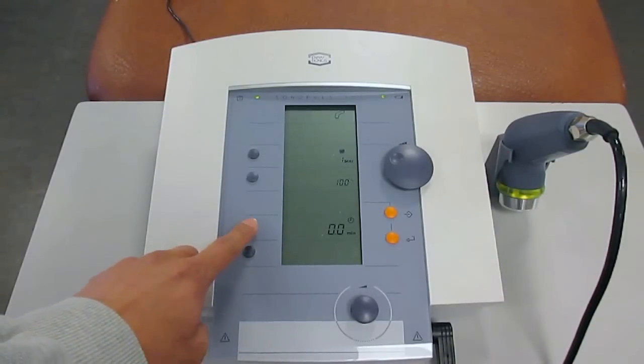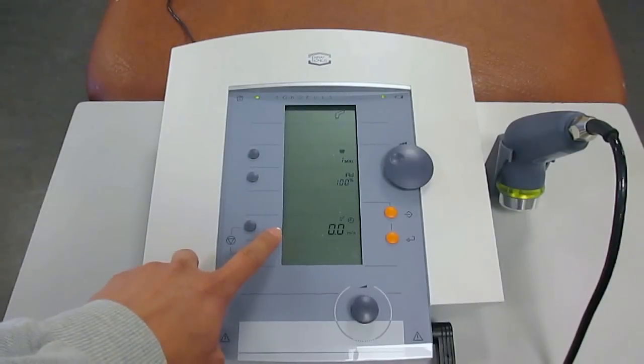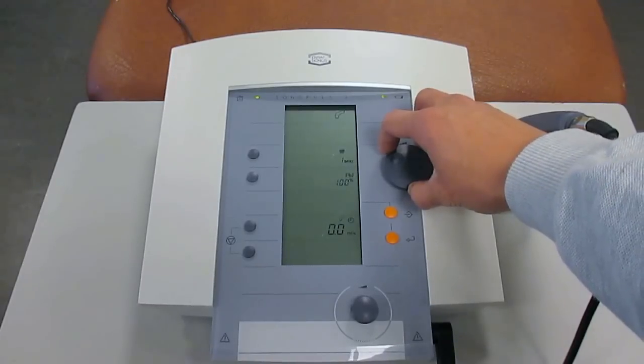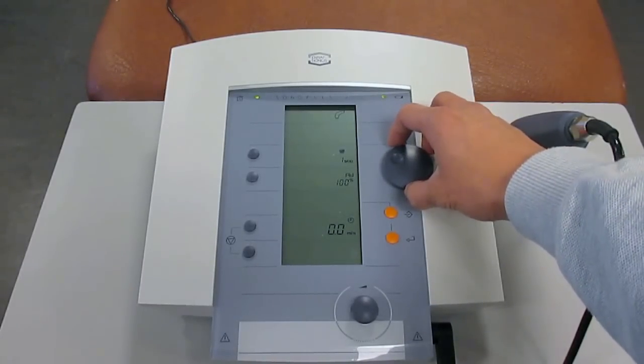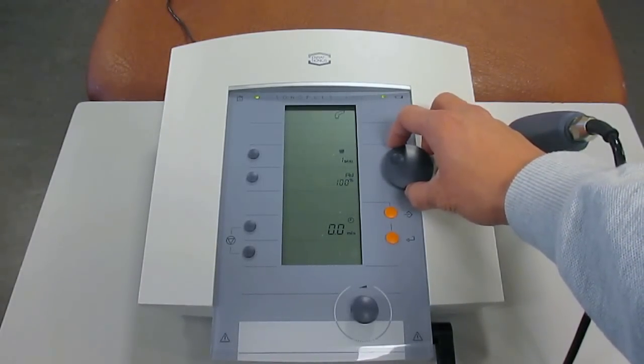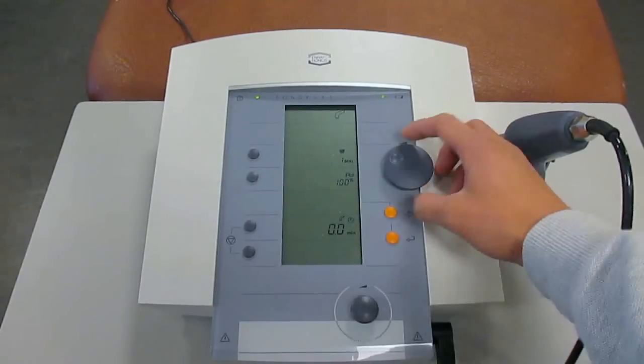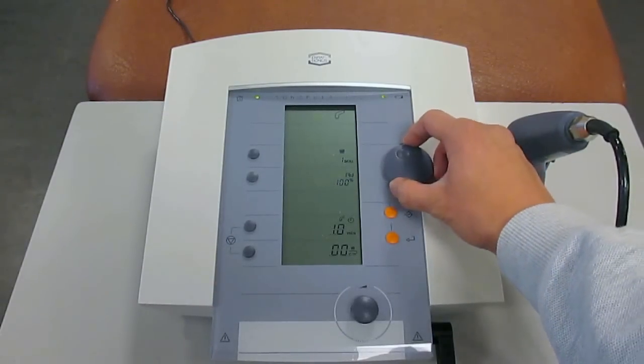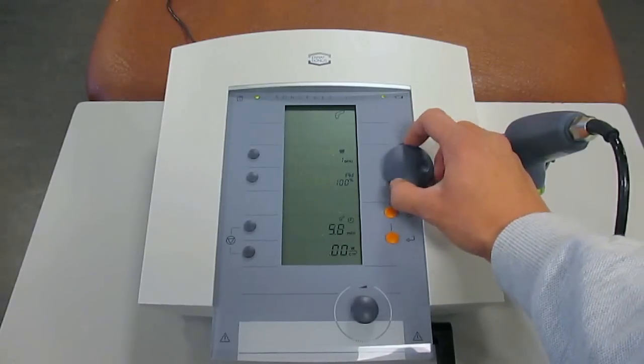This setting over here controls the amount of minutes that you'll be setting for the therapeutic treatment time. The therapeutic treatment time depends on the depth of the tissue and the area that you're trying to treat. You can simply press on that grey button over here and use the dial to increase the amount of time.